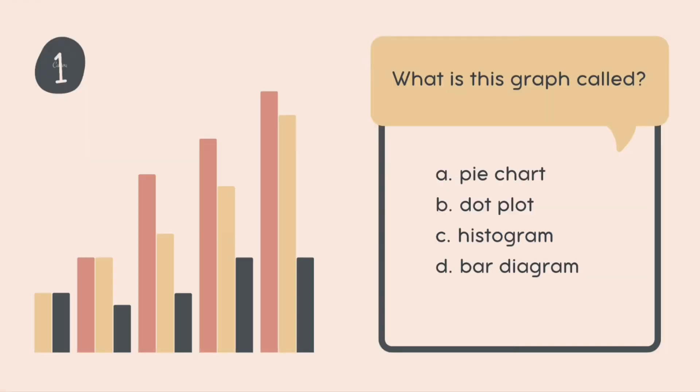So this is our very first chart. So what is this graph called? Is it a pie chart or a dot plot, a histogram or a bar diagram? What is it? I want you guys to comment down in the below the video. At any point of time if you need more time to look at the graph please pause this video and once you are okay with it play it again.